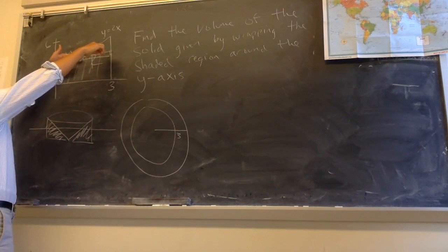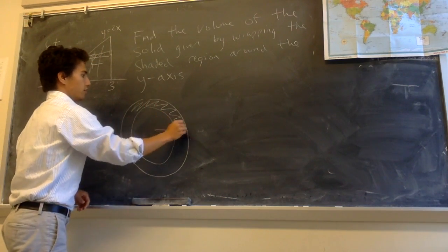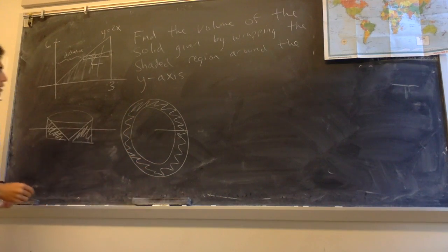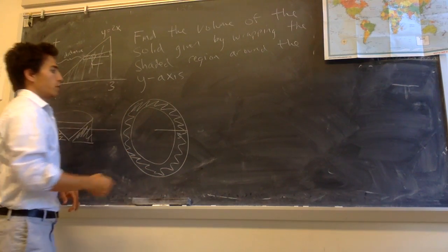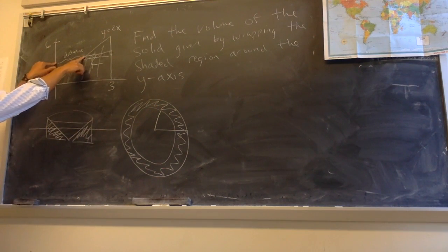And the cross-section then is the area between the two, so the cross-section is the area of this annulus. And so to compute this we just need to know whatever this radius is, and this radius is given by the x-coordinate here.